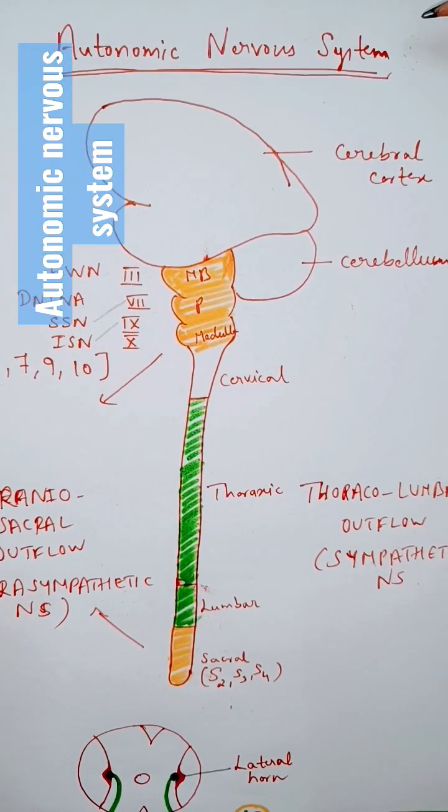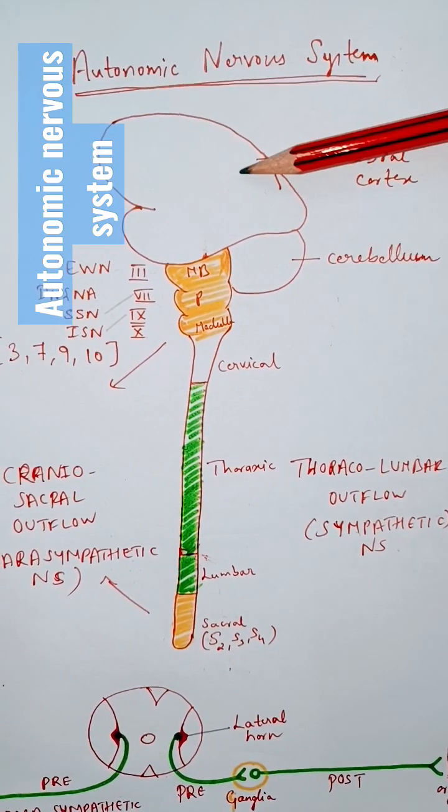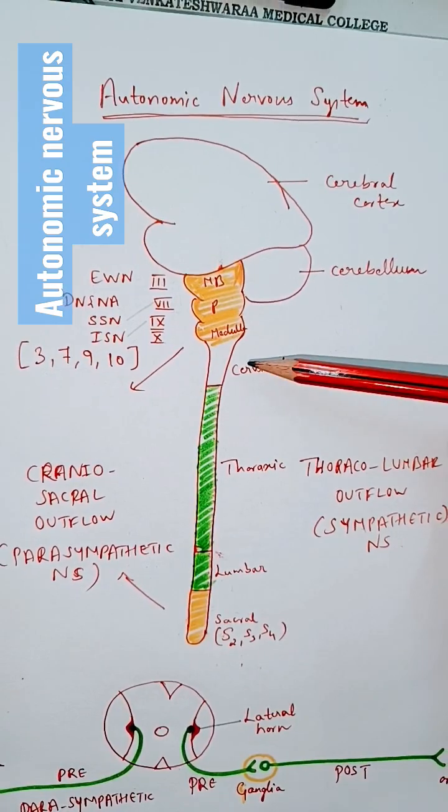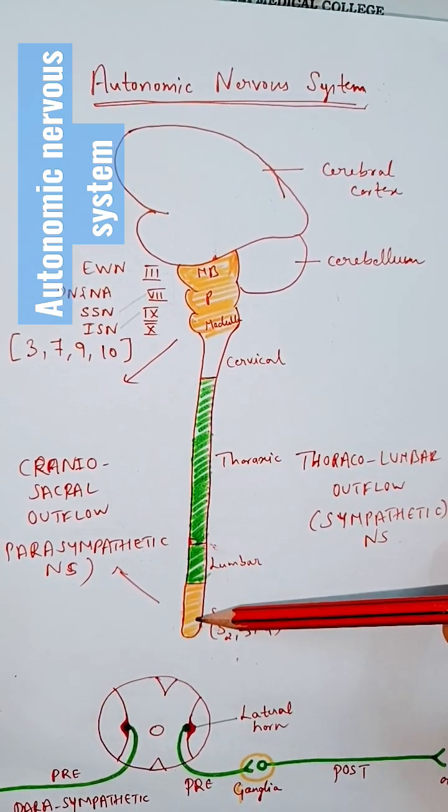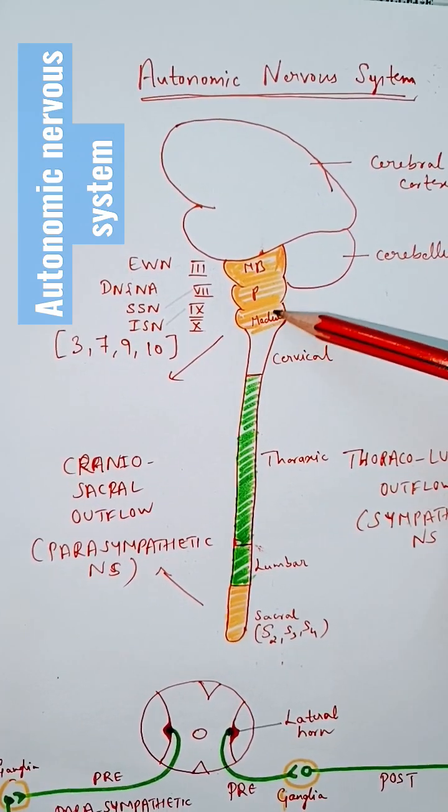The autonomic nervous system controls the vegetative functions of the body. This line diagram represents the cerebral cortex, cerebellum, brainstem (midbrain, pons, and medulla), cervical, thoracic, lumbar, and sacral segments of the spinal cord. If you see here, the cranial nerves arising from the brainstem.